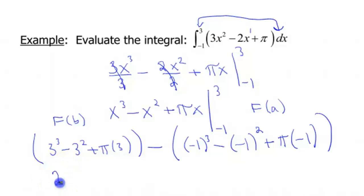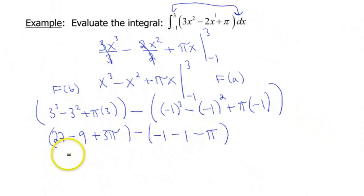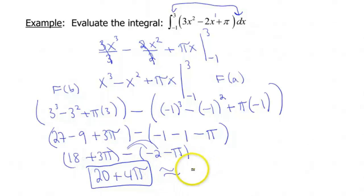So crunch out some of these numbers. This gives us 27 minus 9 plus 3 pi. I'm going to leave that as exact, we can approximate it later. Then we have negative 1 cubed will give us negative 1. Minus negative 1 squared gives us a positive 1. And then that's going to be minus pi. So that gives us 18 plus 3 pi. And then minus negative 2 minus pi. Combining our like terms, that gives us a negative and a negative. So this negative here has to be distributed, which is why I keep putting these parentheses in here. So that's going to end up giving me 20 plus 4 pi. So that's my exact value of my integral. If you just want an approximate value, though, this gives us about 32.57.